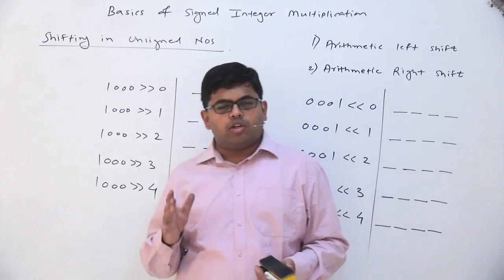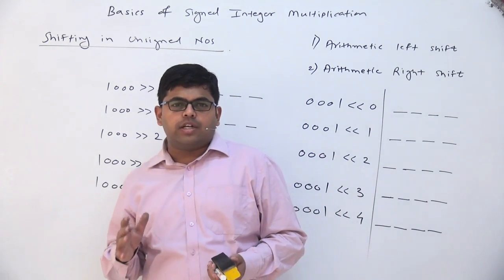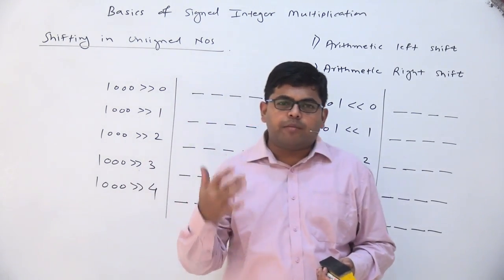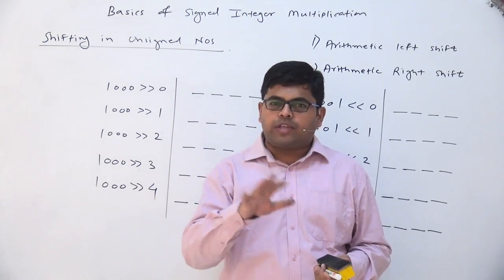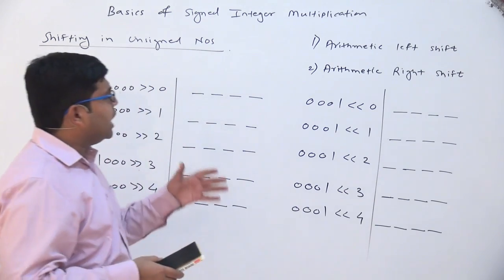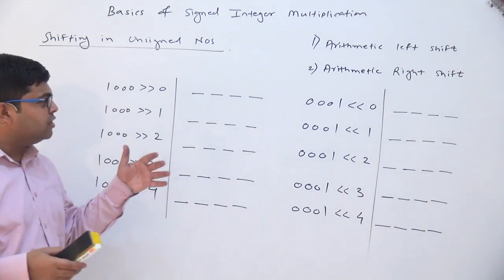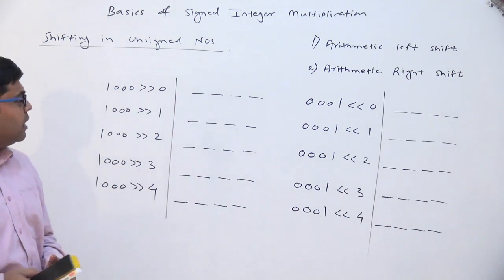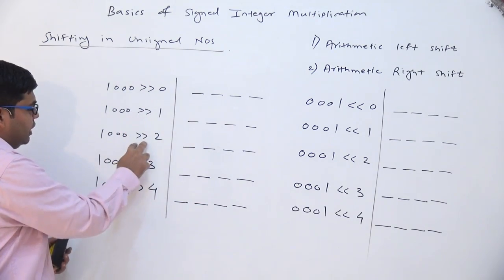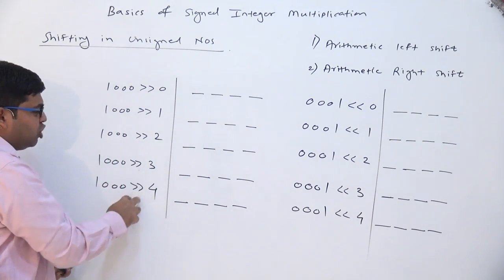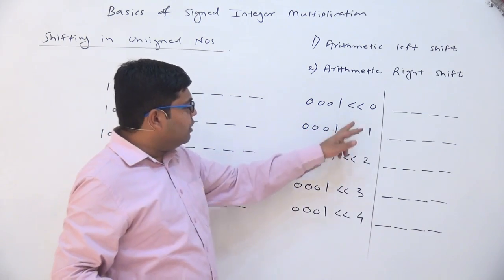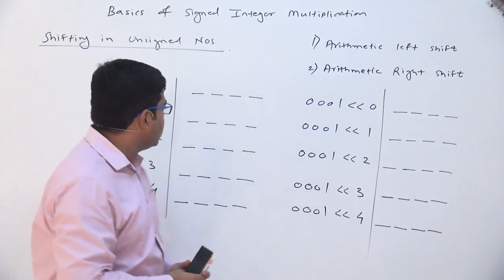Let us look at some basic operations which are needed for understanding multiplication of signed integers in more detail. The operations are arithmetic left shift and arithmetic right shift. Right shift we will indicate with this operator and left shift we will indicate with this operator.